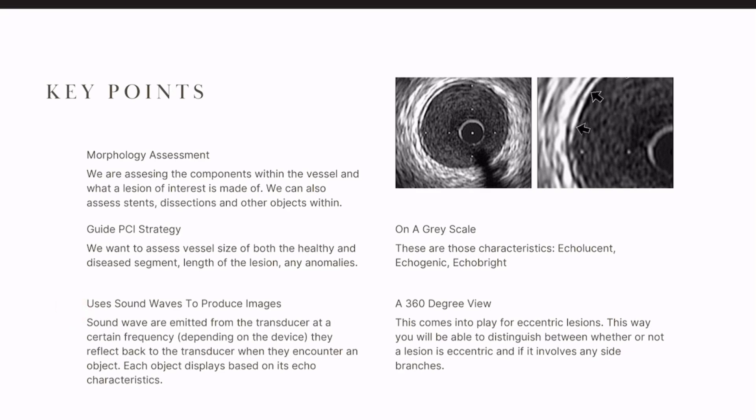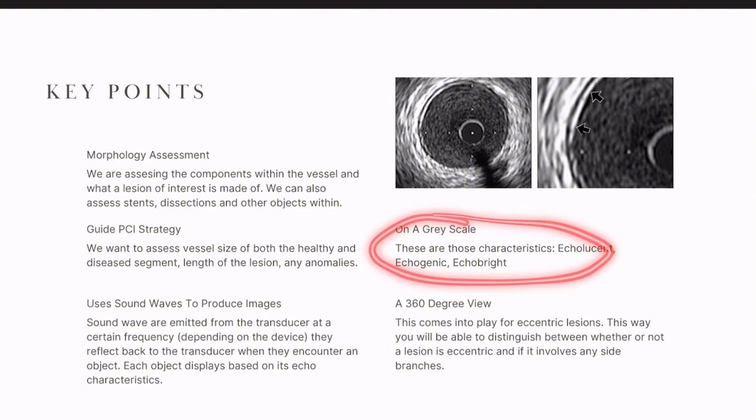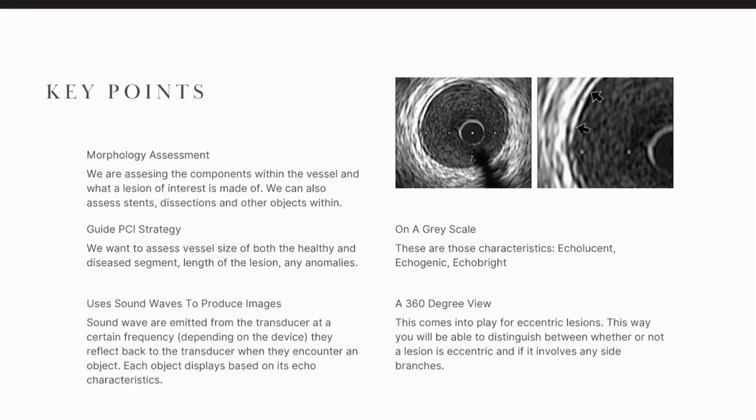Everything's on a gray scale for IVUS. You'll hear terms like echolucent, echogenic, and echobright, which we will talk about as well. That is kind of the equivalent to black, white, and gray.